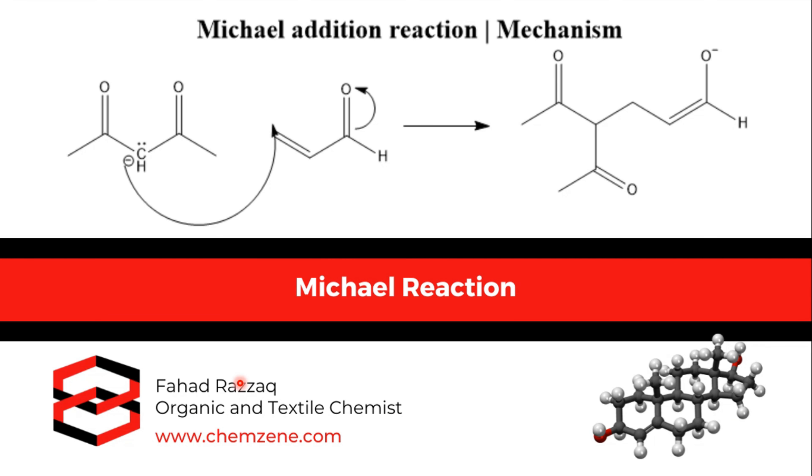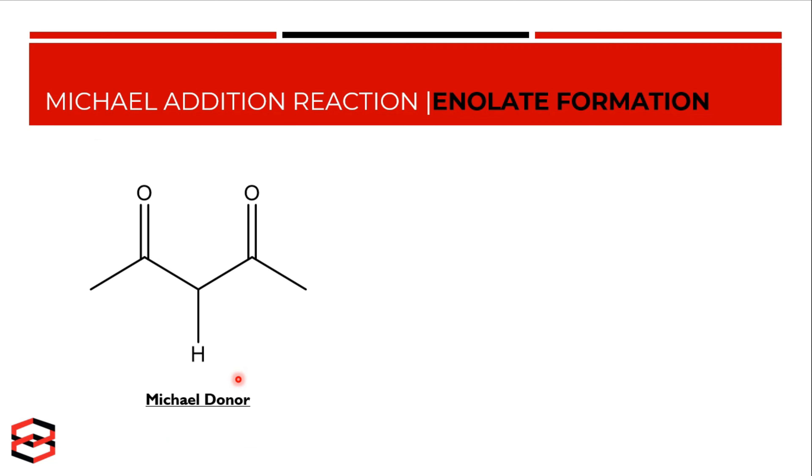Hello everyone, welcome to my YouTube channel Camzine. In this video, we are going to talk about the Michael reaction. The first thing we need is a Michael donor, which is typically a stabilized enolate, and we use a base to extract the alpha hydrogen from this Michael donor, and so we get an enolate ion.